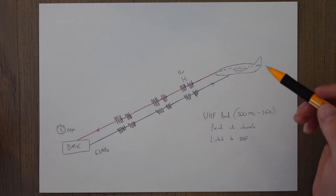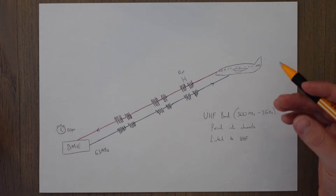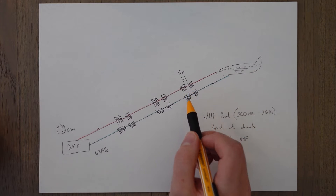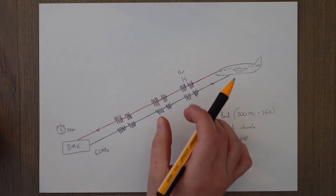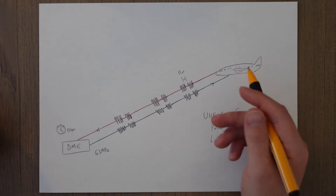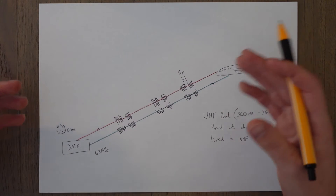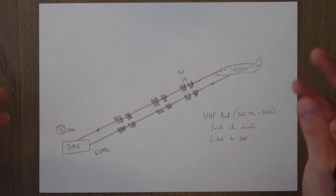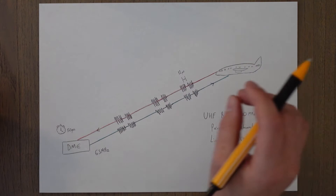The DME interrogator on the aircraft sends out a stream of paired pulses as a signal to the ground station on a specific frequency. The pulses are jittered uniquely to each plane. Each pulse pair is separated internally by 12 microseconds as standard, but the gaps in between each pair of pulses is unique to each aircraft. This means each aircraft has a unique signature in the form of those gaps. On average the amount of pulses per second is around 150, until the aircraft is locked on to a DME signal, at which point it drops to 24 pulse pairs per second.